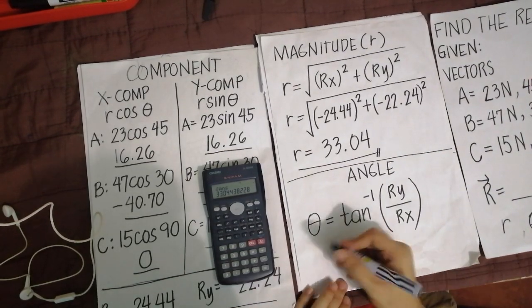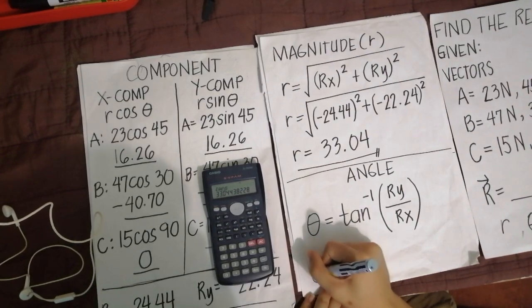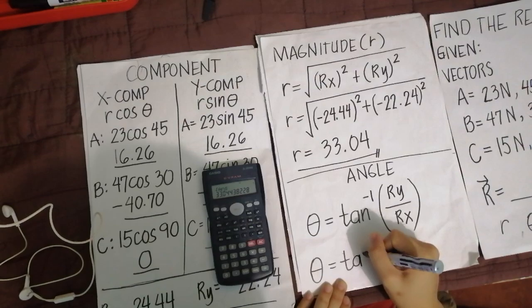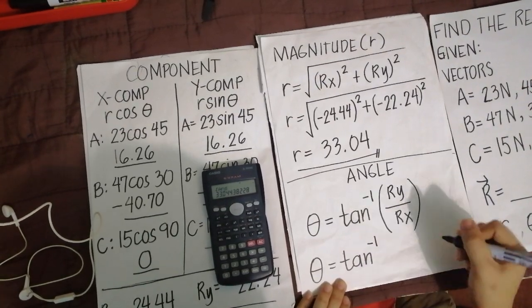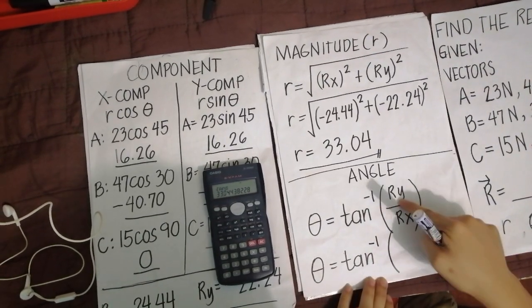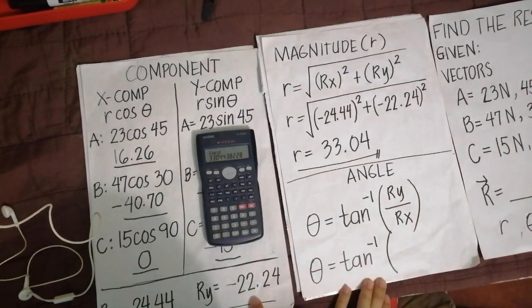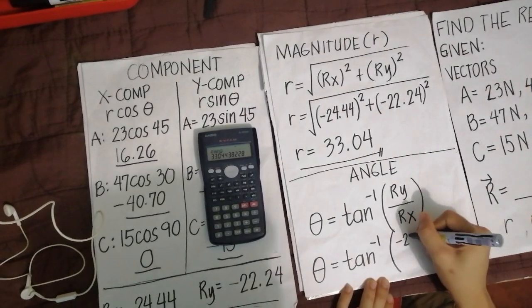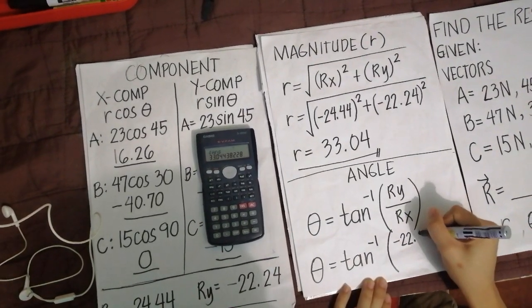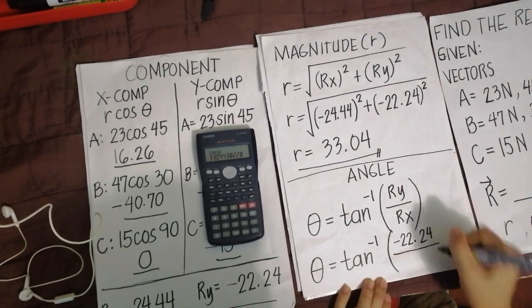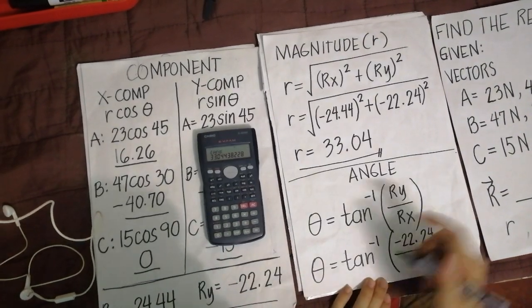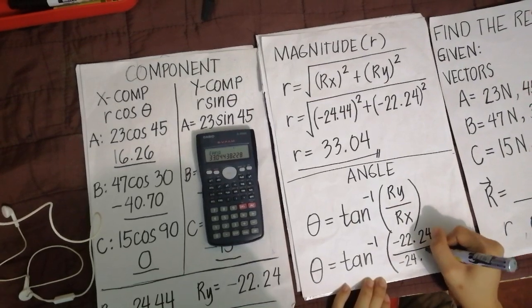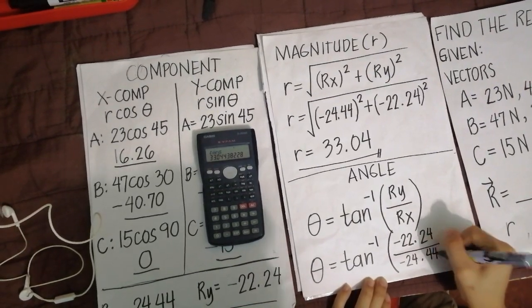Then, substitute lang natin. So, theta. Yan yung hinahanap natin. Copy natin. Equals R tan. Mga ituturuan mo kayo paano ilagay ito sa calculator. So, ito. Lagyan natin parenthesis. Yung R y natin, lagyan natin. R y is this. Negative 22.24. Divided by or over R x which is negative 24.44. Then, close parenthesis.